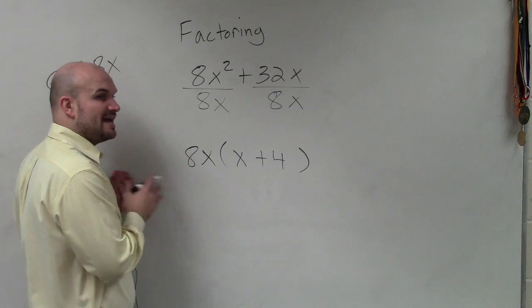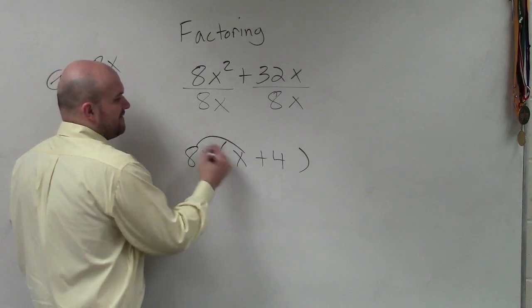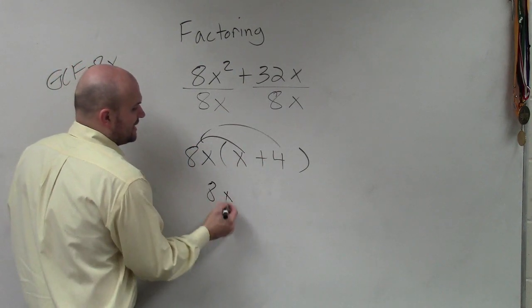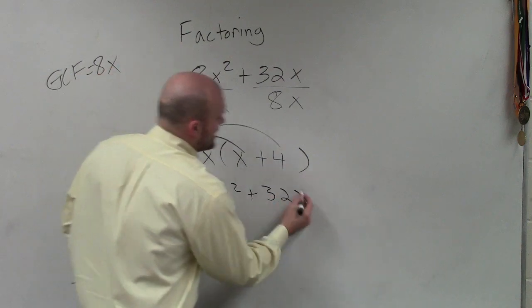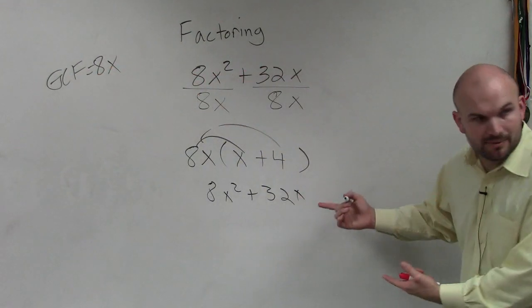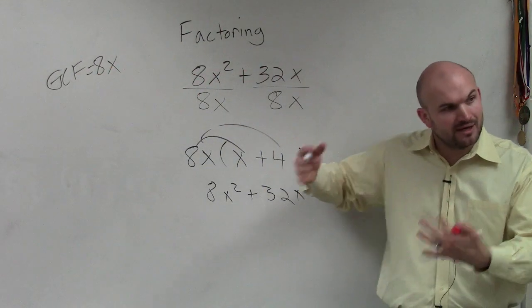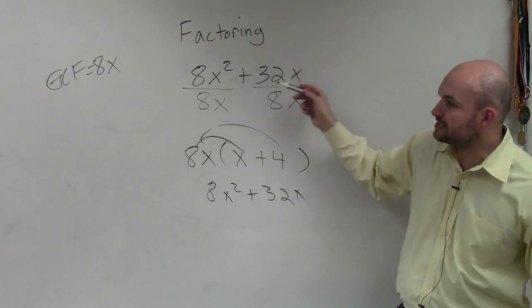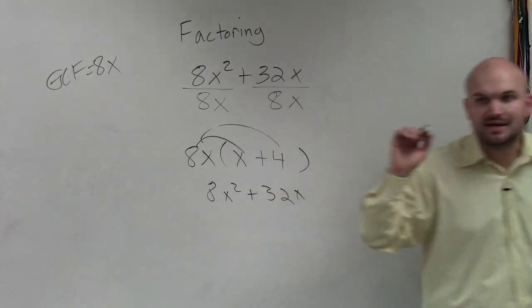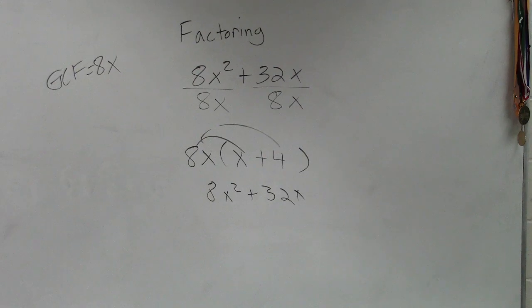And the only thing I want you to understand again, does this work? If I multiply these two, I get 8x squared plus 32x, which was our original problem. All we're doing right now is just understanding how to rewrite an expression as a product, as a multiplication problem.